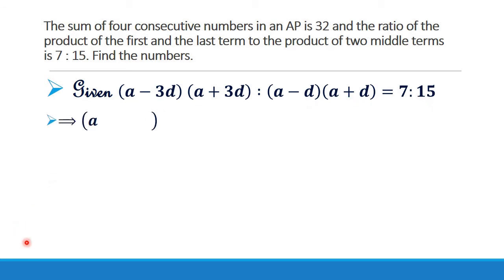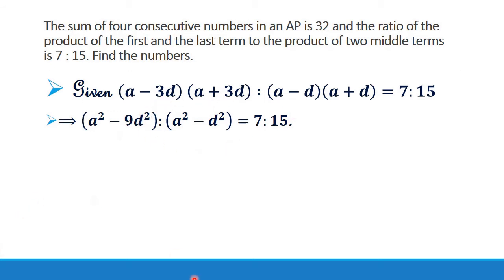By multiplying, A squared minus 9D squared is to A squared minus D squared, equal to 7 is to 15. That is, by multiplying we get an equation like this. Now by taking A squared minus 9D squared divided by A squared minus D squared equal to 7 by 15, since they are in the ratio 7 is to 15, we can write the terms this way.